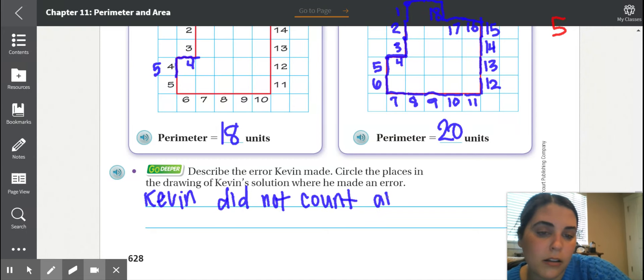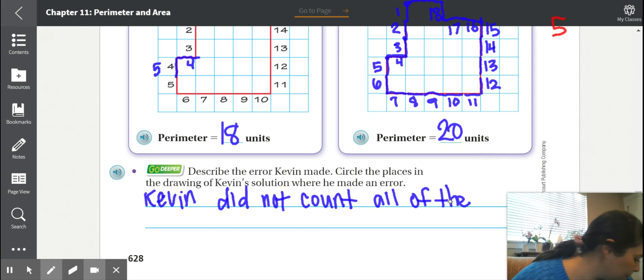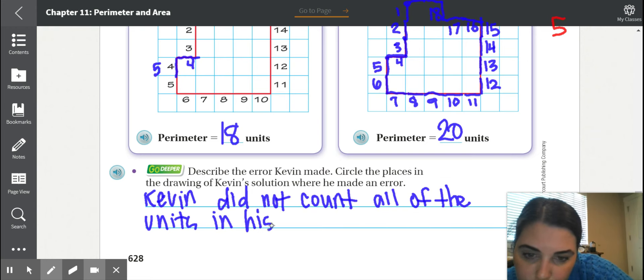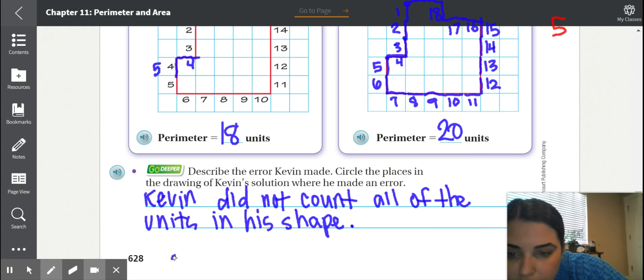All of the units in his shape. When we say units, we mean from like one side to the next, that would be one unit. He did not count all of those.